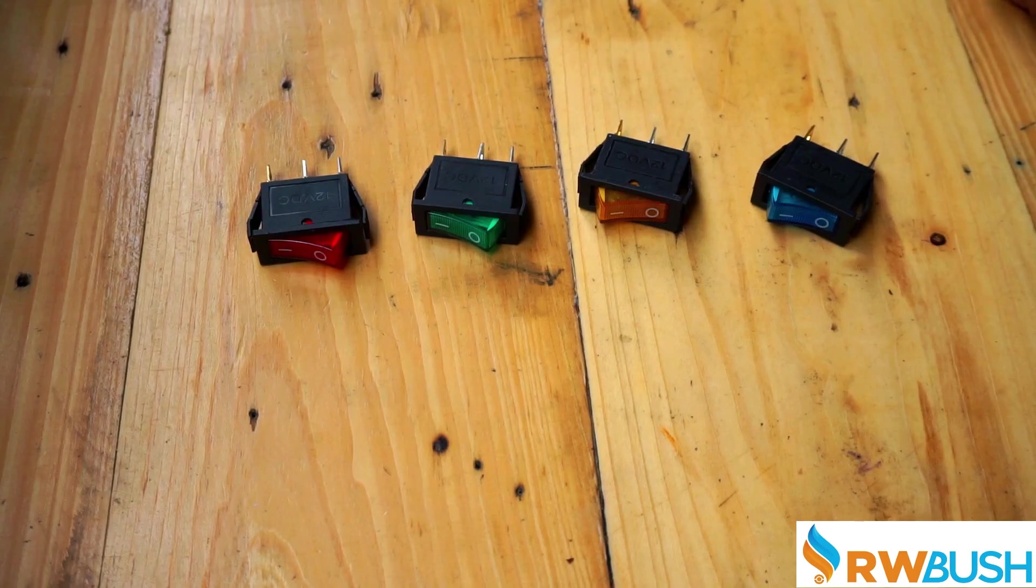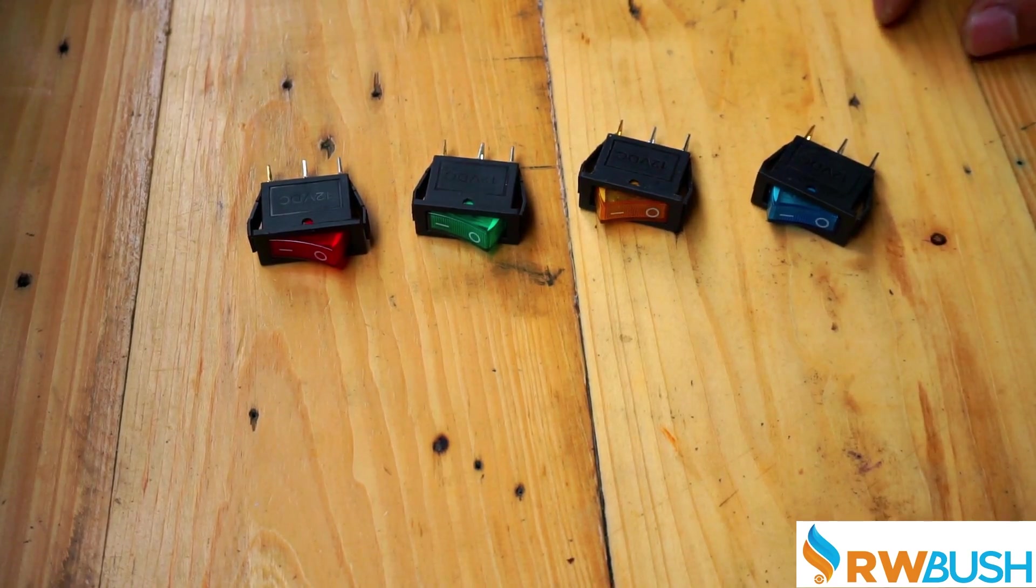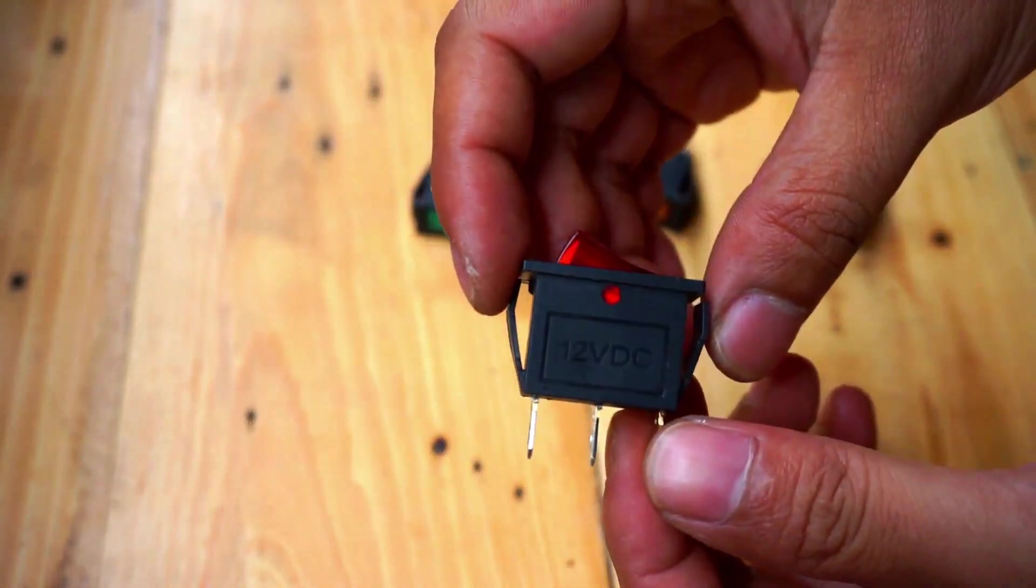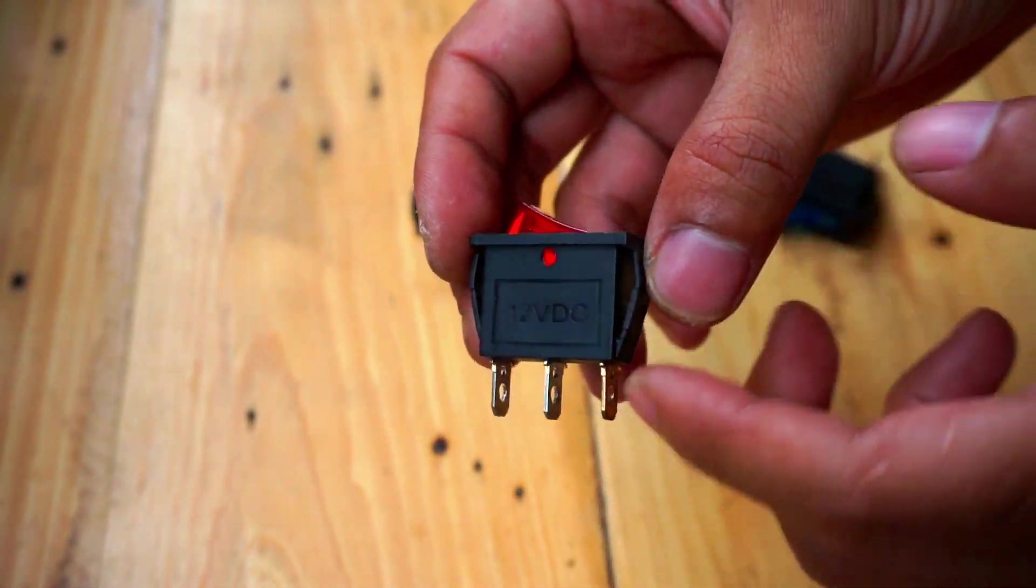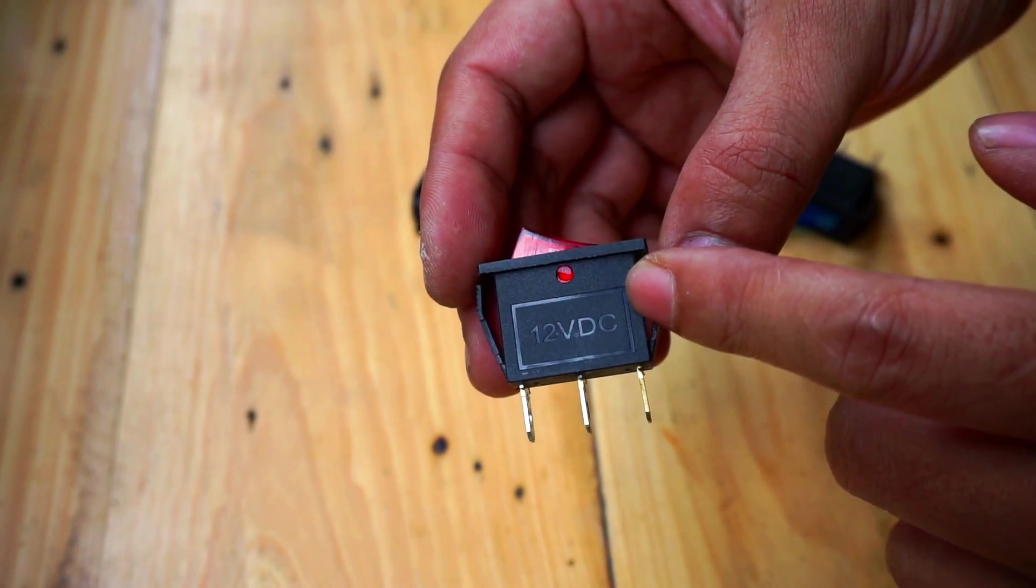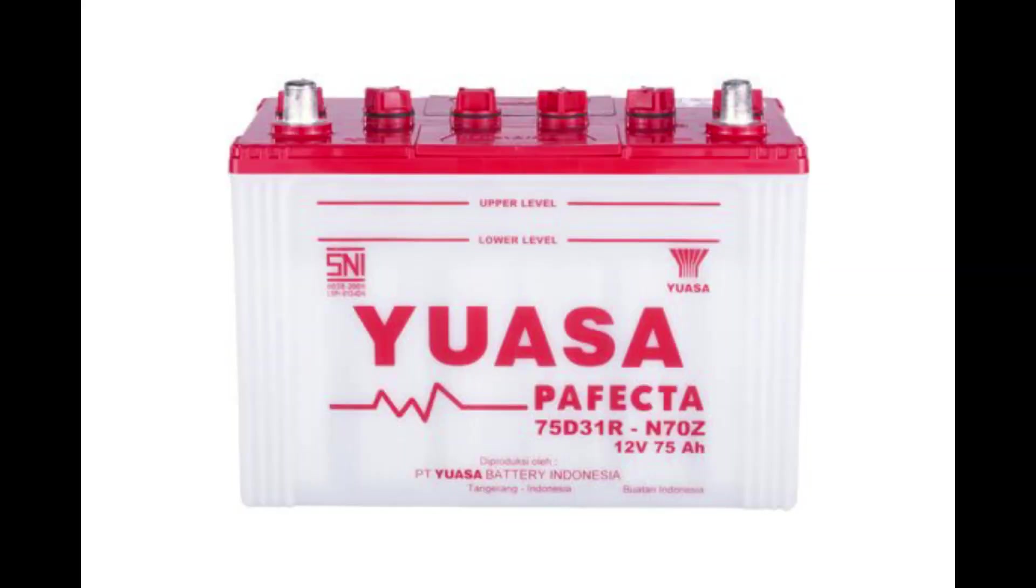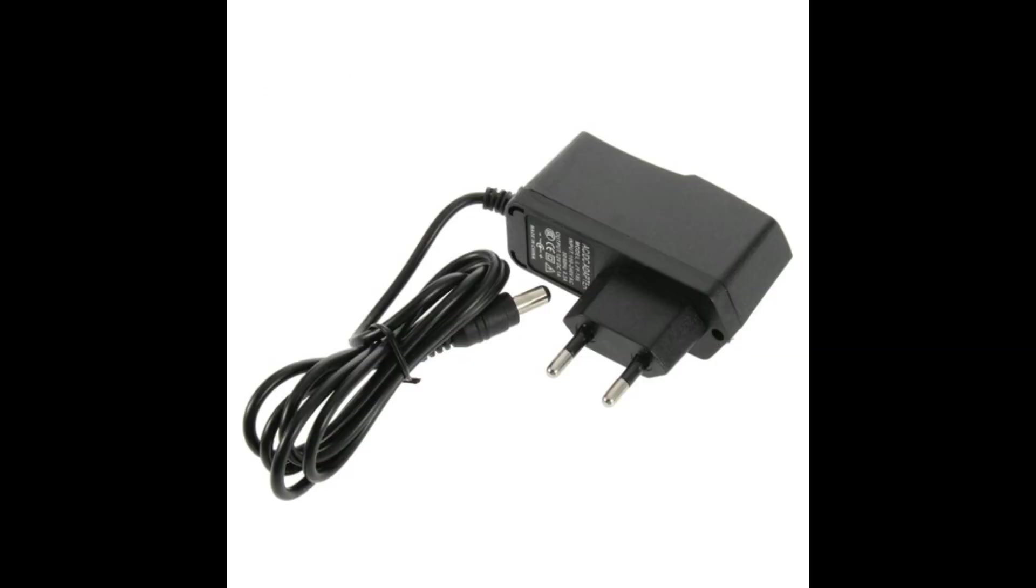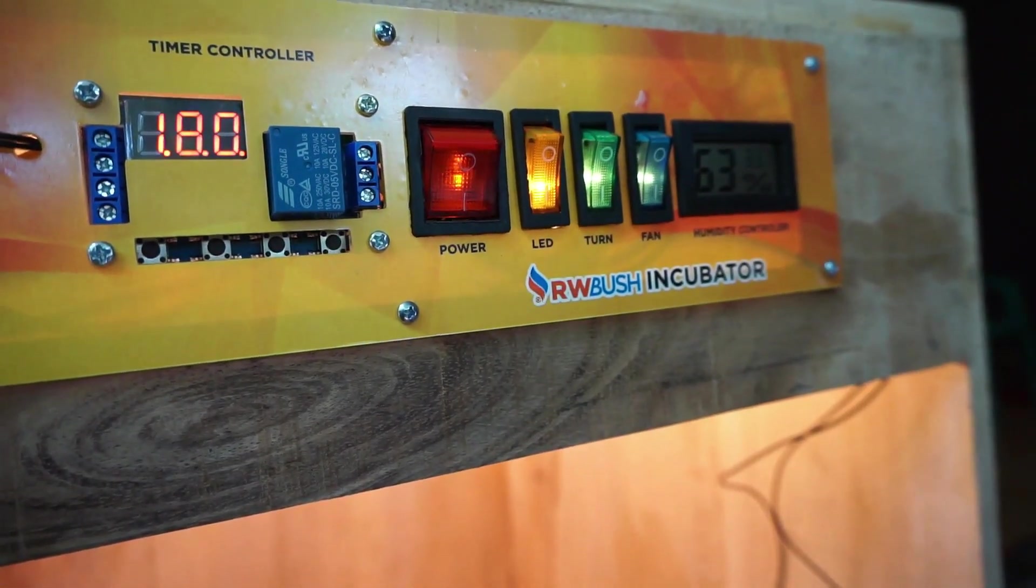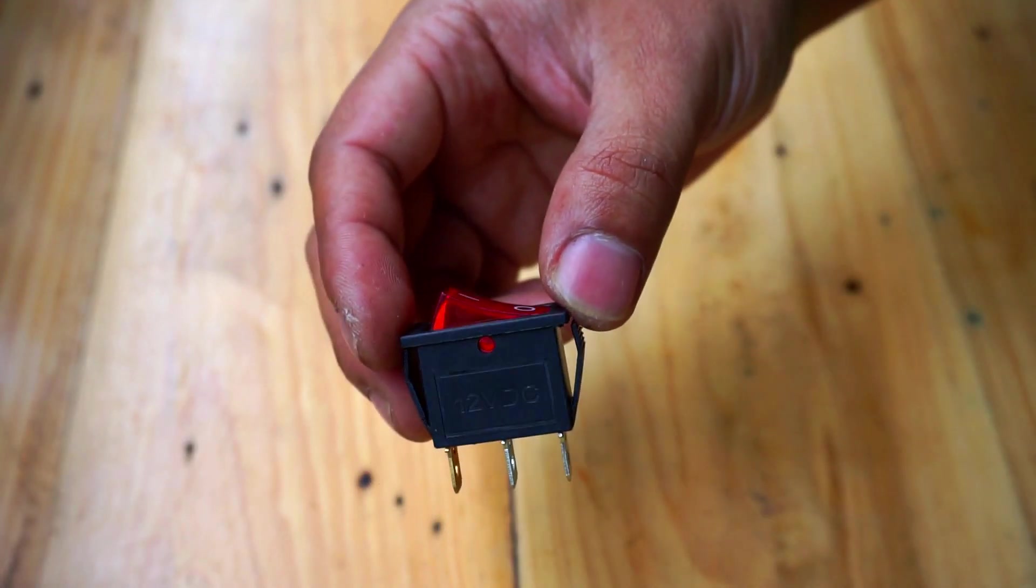Hi everyone, welcome to my channel. In this video I'm going to show you how to wire an illuminated three-prong 12 volt DC rocker switch. This DC rocker switch works properly with 12 volt DC current such as batteries and adapters. If you use this for 220 AC current you can probably still use this switch but the illuminated light won't work.